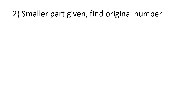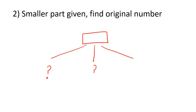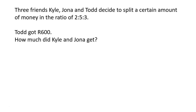Now we're going to do the more interesting kind of example where they don't give you the original number. In the examples so far, they give you a number at the top and you break it up into parts. But now they're going to give you one of the smaller parts and you've got to work out the rest. It's not actually that difficult. Three friends — Kyle, Jonah and Todd — decide to split a certain amount of money into the ratio of two to five to three. So two is Kyle, five is Jonah, and three is Todd.